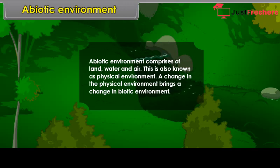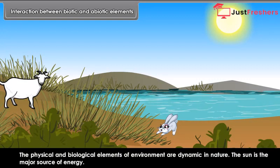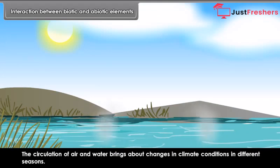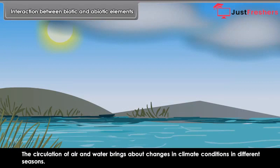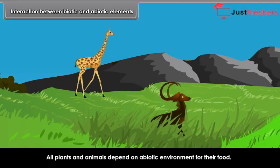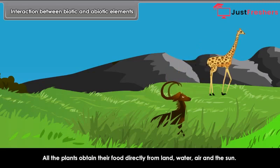Interaction between biotic and abiotic elements: The physical and biological elements of environment are dynamic in nature. The sun is the major source of energy. All changes in the abiotic environment are powered by solar energy. The circulation of air and water brings about changes in climate conditions in different seasons. These climate changes further affect biotic elements. All plants and animals depend on abiotic environment for their food.